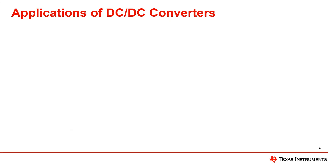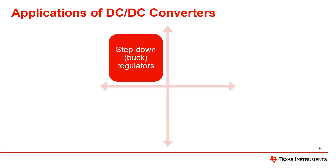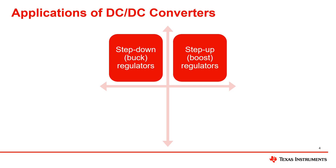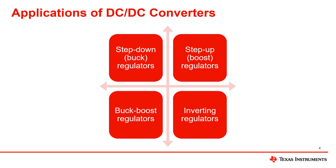Switching regulators are the most efficient way to convert one DC voltage to another DC voltage. DC to DC converters are used for many things such as step down buck regulators, step up boost regulators, buck boost regulators, and inverting regulators.